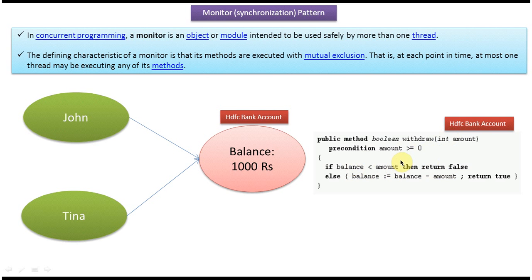Now say we have one HDFC bank account which has 1000 rupees and it is shared by two people — one is John, another one is Tina. Now John — he is Thread A. This Thread A is accessing this withdraw method.